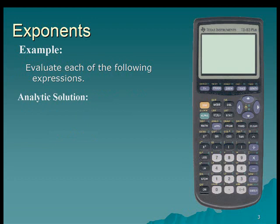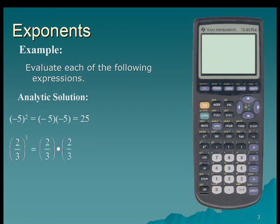Evaluate each of the following expressions. Negative 5 quantity squared is equal to the base times itself: negative 5 times negative 5, which is positive 25. Next, 2-thirds quantity cubed is simply 2-thirds times itself 3 times, for a product of 8 over 27. And 3 raised to the 4th power is simply 3 times itself 4 times, for a product of 81.